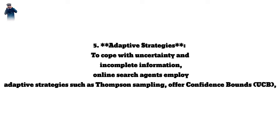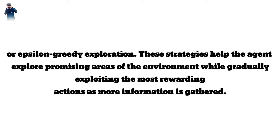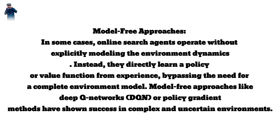To cope with uncertainty and incomplete information, online search agents employ adaptive strategies such as Thompson Sampling, Upper Confidence Bounds (UCB), or Epsilon-Greedy Exploration. These strategies help the agent explore promising areas of the environment while gradually exploiting the most rewarding actions as more information is gathered.